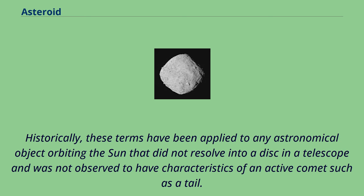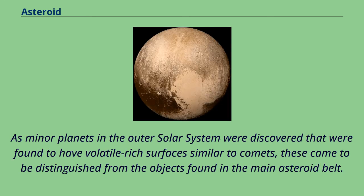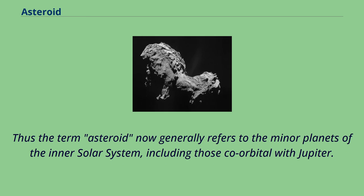Historically, these terms have been applied to any astronomical object orbiting the sun that did not resolve into a disk in a telescope and was not observed to have characteristics of an active comet such as a tail. As minor planets in the outer solar system were discovered with volatile-rich surfaces similar to comets, these came to be distinguished from objects in the main asteroid belt. Thus the term asteroid now generally refers to the minor planets of the inner solar system, including those co-orbital with Jupiter.